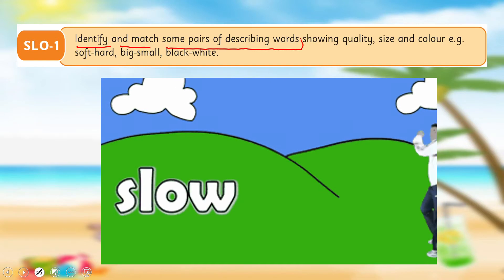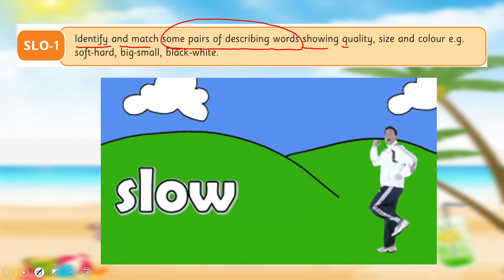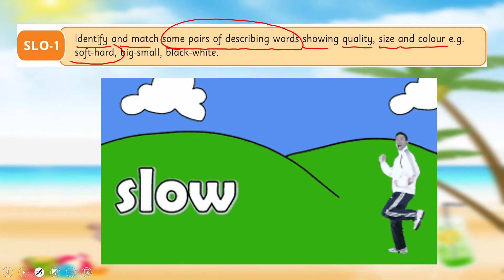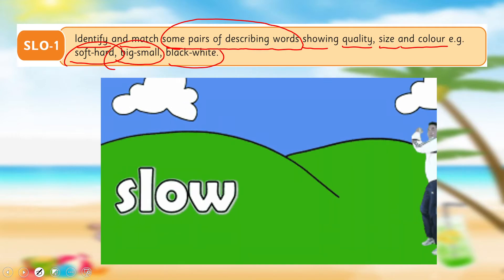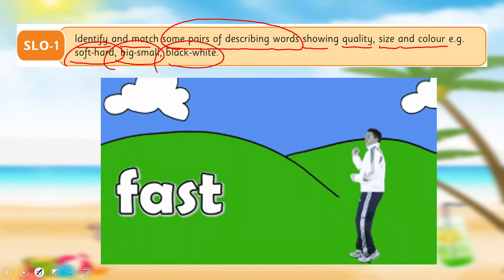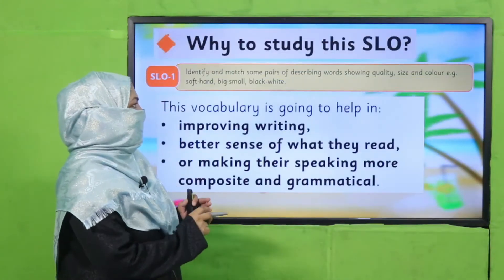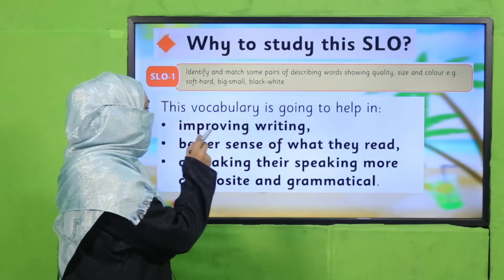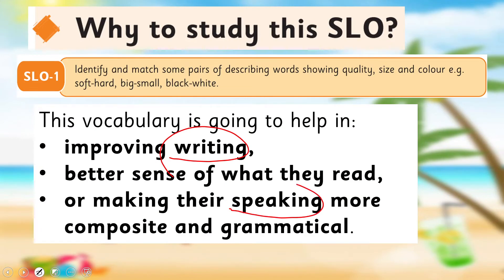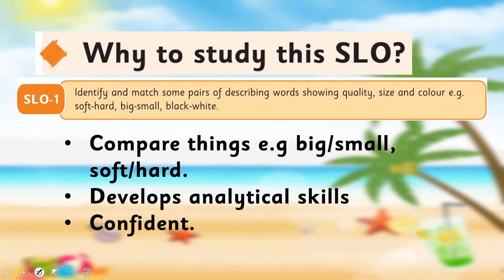We are matching and learning describing words related to quality, size, and color — for example: soft and hard, big and small, black and white. Through this activity, children learn describing words both in writing and in reading. They understand and use describing words practically in real life, learning to compare things — this is big, this is small, this is soft, this is hard.